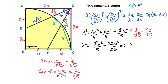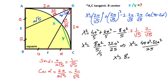Therefore, X² = (40A² minus 32A²)/25 = 8A²/25. Taking the square root of both sides, X = 2A√2/5.